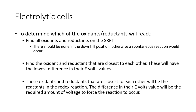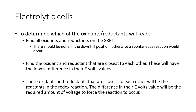To determine which oxidants and reductants will react, find all of them on the standard reduction potential table. There should be none in the downhill position — remember, a downhill position represents spontaneous reactions. Since electrical energy is driving a chemical change here, you're not expecting any spontaneous reactions. You're always expecting an uphill orientation on the standard reduction potential table.